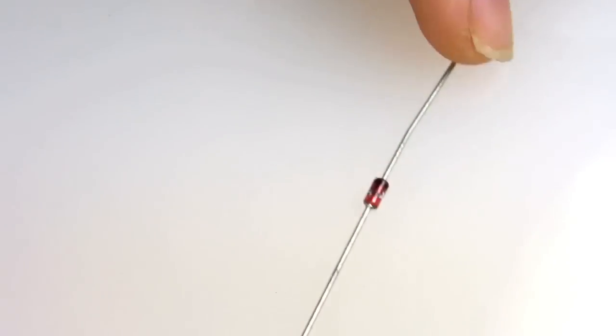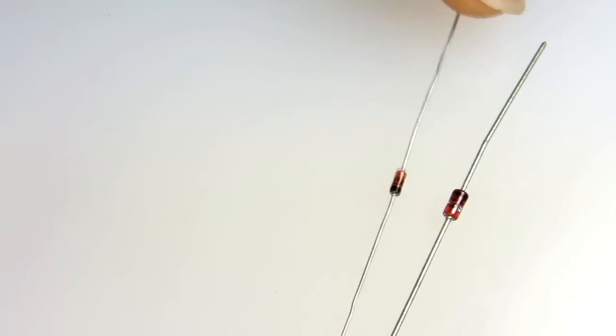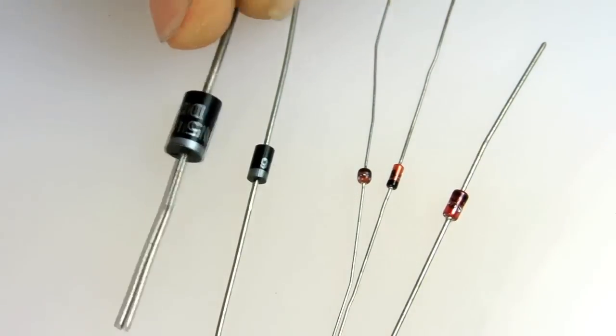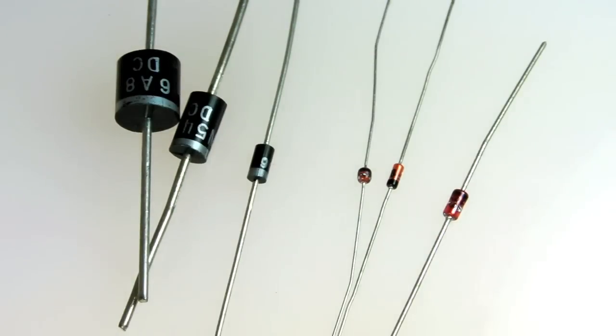It's a lot like a valve that prevents water from flowing the wrong way but lets it pass in the forward direction. Some are designed for use with low electrical current. These are often called signal diodes. Others, usually much larger, are designed for use with higher current. These are usually referred to as rectifier diodes.